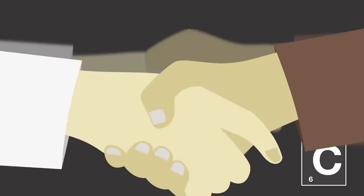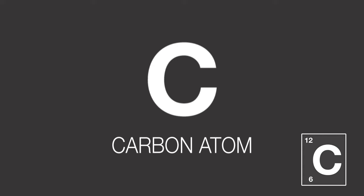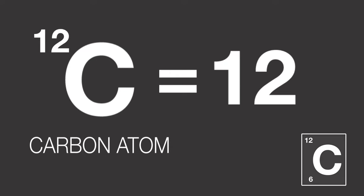In 1961, scientists eventually agreed that a carbon atom — or to give it its full and correct name, a carbon-12 atom — has a mass of exactly 12, making it the accepted reference atom. In fact, the mass of a carbon-12 atom is so exact and well agreed that it is sometimes written to four decimal places.